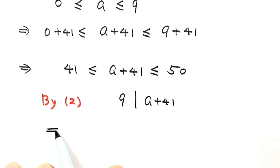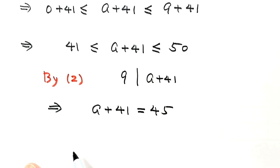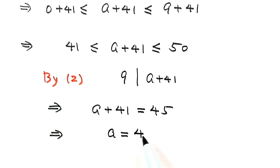So a plus 41 equals 45. Solving for a, we get a equals 4. So 4 is the answer for this question.